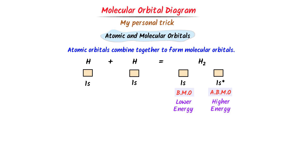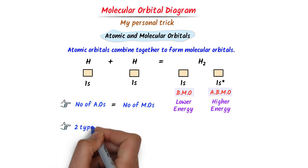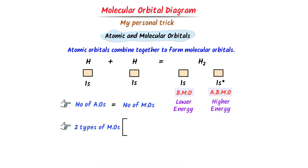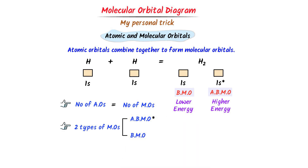To summarize, we learn two important points. First, the number of atomic orbitals is always equal to the number of molecular orbitals. Second, there are two types of molecular orbitals: bonding molecular orbitals and anti-bonding molecular orbitals. Bonding molecular orbitals have smaller energy while anti-bonding molecular orbitals have higher energy, which is why we put a star on them.